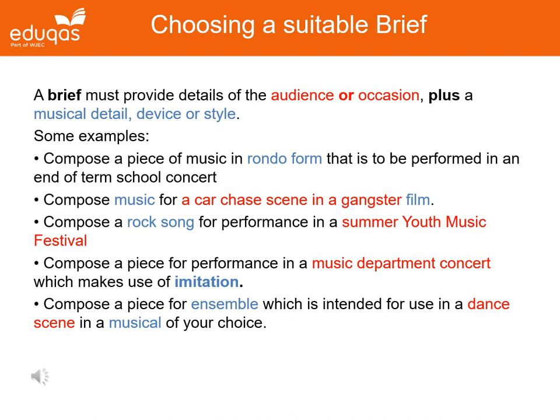Here are some examples: compose a piece of music in rondo form that is to be performed in an end of term school concert; compose music for a car chase scene in a gangster film; compose a rock song for performance in a summer youth music festival; compose a piece for performance in a music department concert which makes use of imitation; compose a piece for ensemble which is intended for use in a dance scene in a musical of your choice.